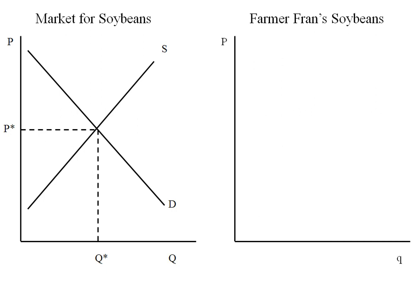On the left we have the market for soybeans — agricultural goods are often the best example of competitive markets. On the right we look at one individual firm in this market. Where supply and demand cross, we get the market price and quantity equilibrium. Taking that price over, I'll draw a horizontal line, which is the individual farmer's demand curve, marginal revenue curve, and average revenue curve.